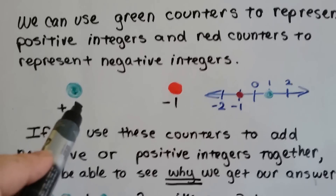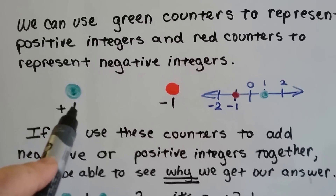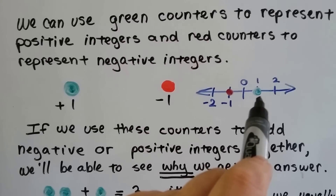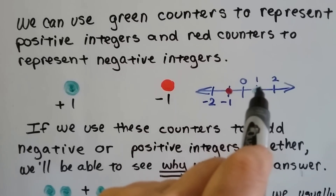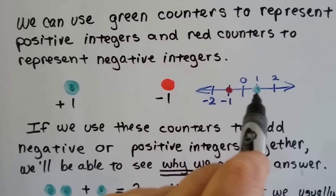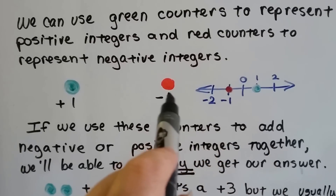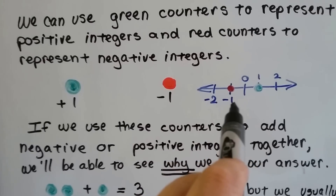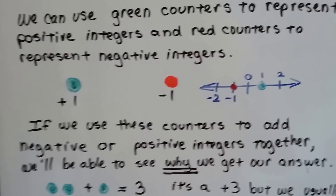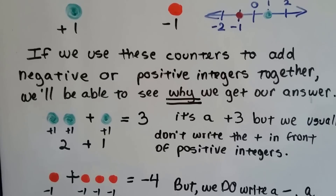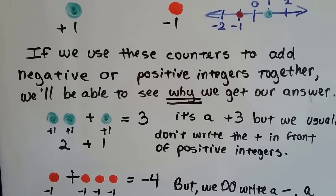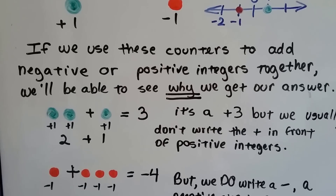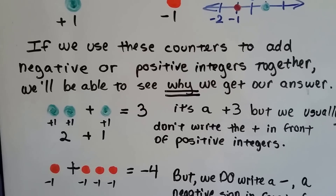This positive one — the green one right here — would be on the right side of the zero. He's at one. And the red one is on the left side of the zero. He's a negative one. If we use these counters to add negative or positive integers together, we'll be able to see why we get our answer.